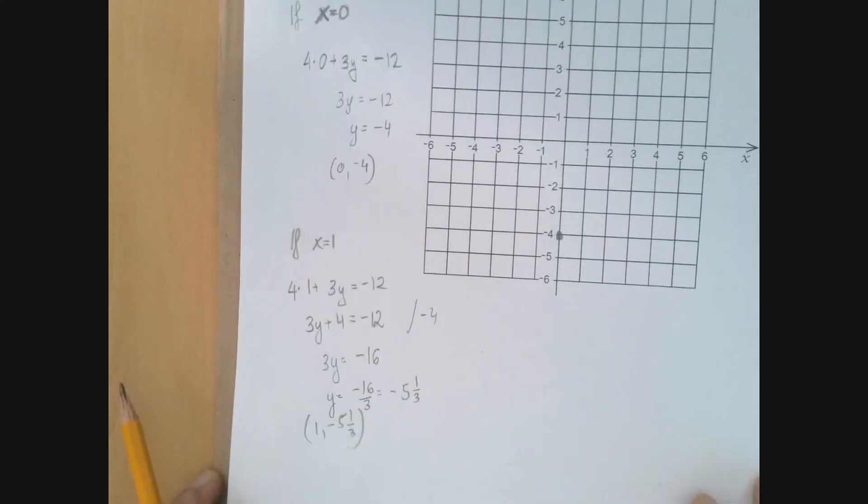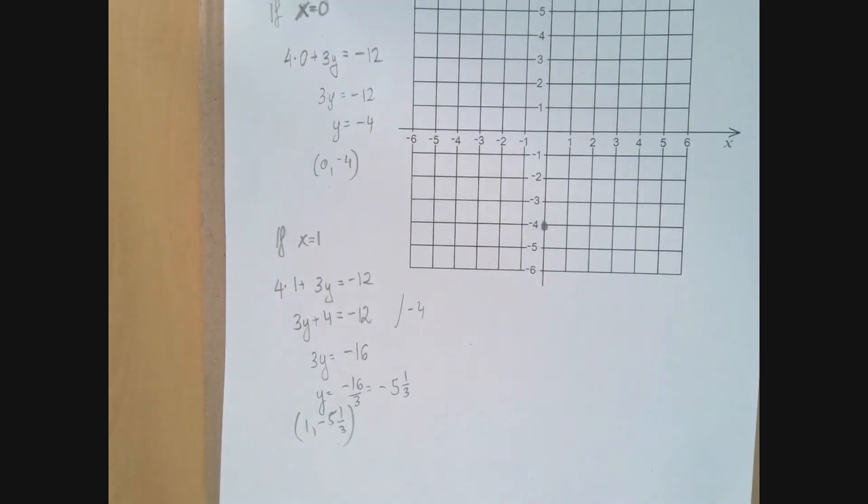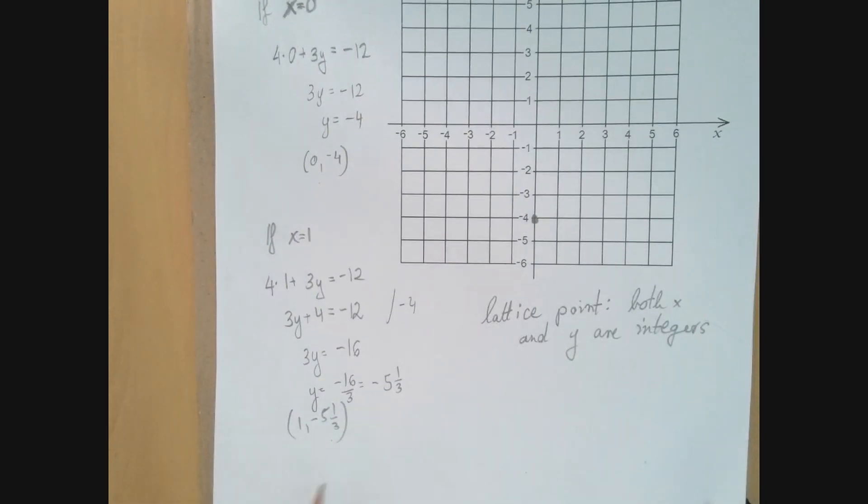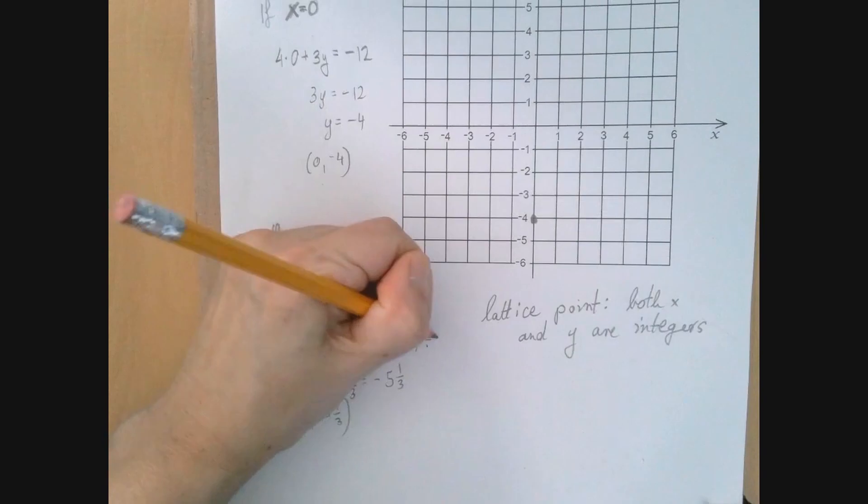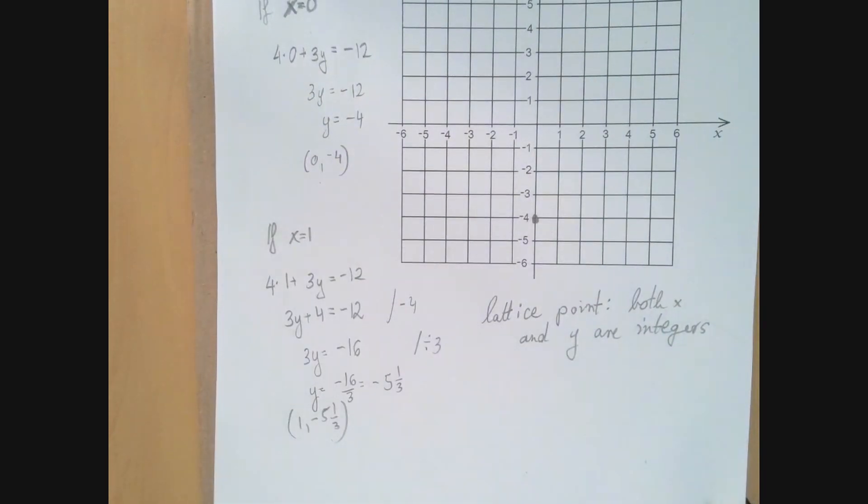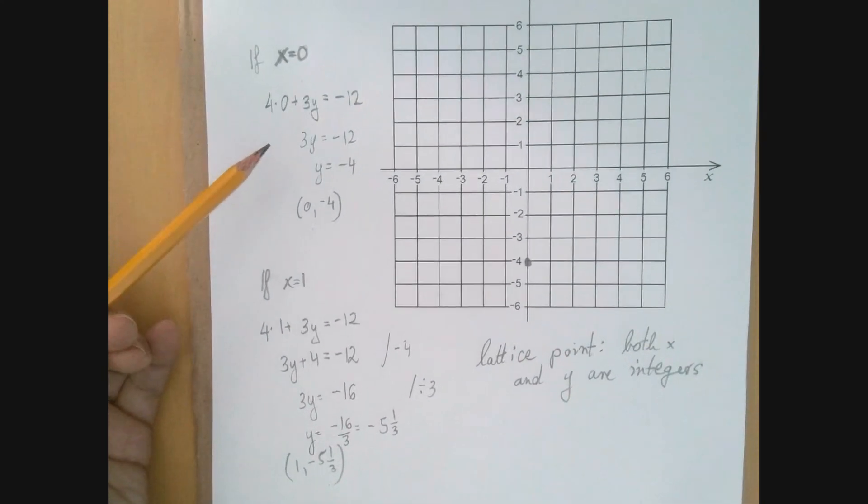This is not a very nice point. If we're going to graph this line with precision, we should probably only use points with integer coordinates. A point whose both x and y coordinates are integers is called a lattice point. This is not completely useless. We can use it for checking. So what happened here? In the last step, we divided by 3. And that's where things went wrong, because negative 16 is not divisible by 3. We sort of got lucky with x equals 0, because negative 12 is divisible by 3.